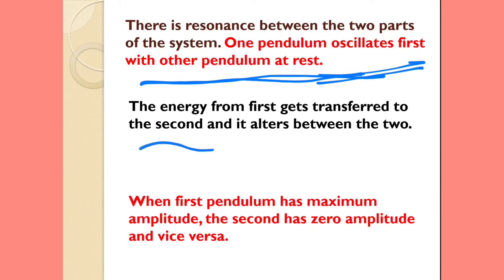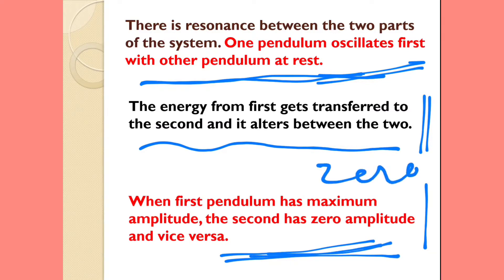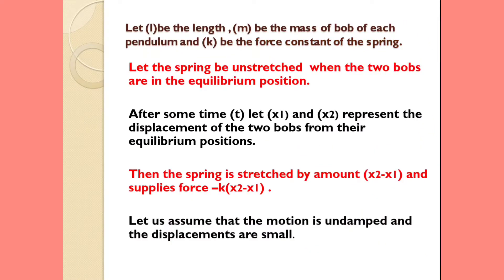Energy from the first pendulum gets transferred to the second and alternates between the two. When the first pendulum has maximum amplitude, the second has zero amplitude, and vice versa — when the second pendulum has maximum amplitude, the first has zero amplitude, as shown in the diagram.